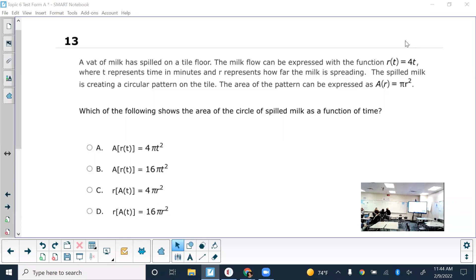So number 13: a vat of milk has spilled on a tile floor. The milk flow can be expressed with the function R(t) = 4t, where t represents time in minutes and R represents how far the milk is spreading. The spilled milk is creating a circular pattern on the tile. The area of the pattern can be expressed as A(R) equals... which of the following shows the area of the circle of spilled milk as a function of time?